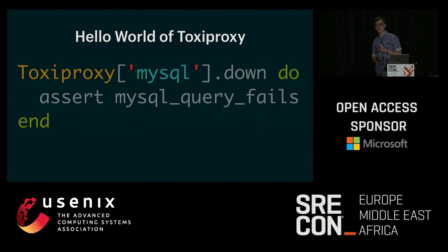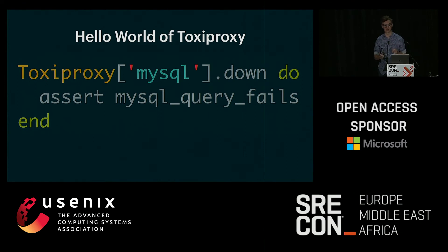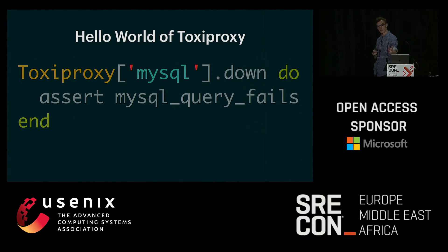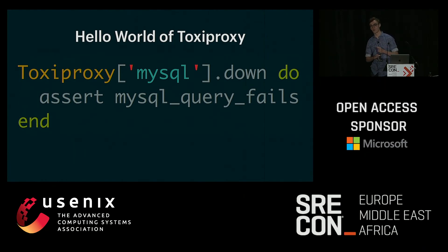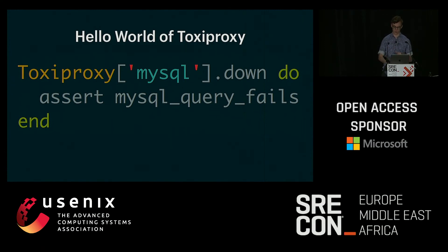We use Toxiproxy in our test suite, hooked in via the client library. We can write tests that look something like this: tell Toxiproxy to select the proxy we're using to connect to MySQL, take it down, and then all the code we run inside that block will run as if MySQL is down. As soon as we exit the block, the failure on the proxy stops and we return to normal operation.